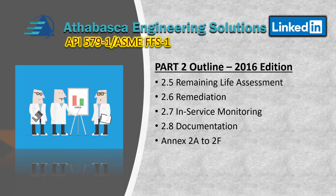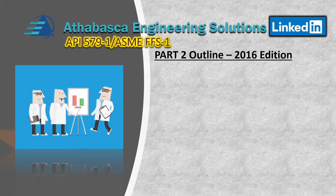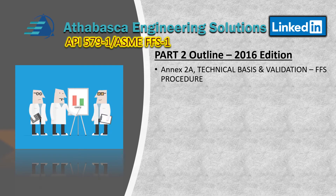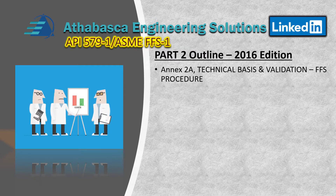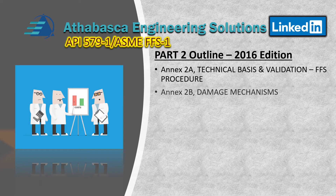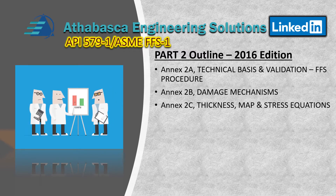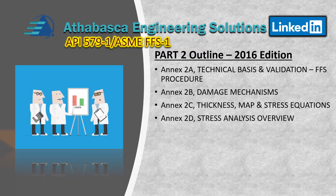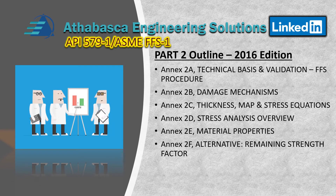The criteria and acceptance criterion recommendations are also contained within the annexes. Part Two has a lot of procedures and methods in its annexes. Annex 2A is the technical basis and validation for the FFS procedure, referenced throughout all other parts. Annex 2B describes the damage mechanisms. Annex 2C covers thickness, MAP, and stress calculations. Annex 2D covers the stress analysis overview and material properties. Annex 2F covers alternate remaining strength factors.